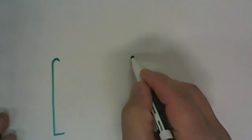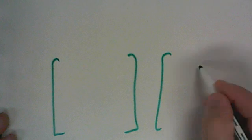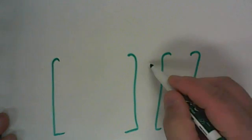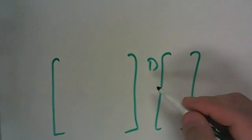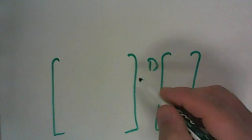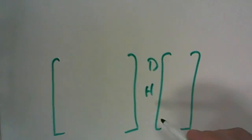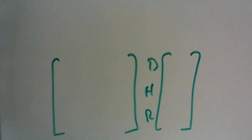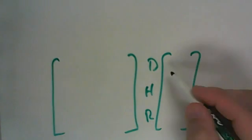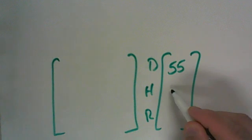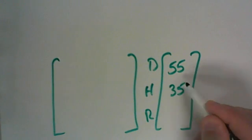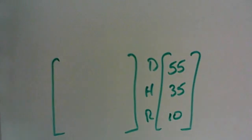You have a dairy farmer who knows that 55% of his herd is dominant. We're going to set it up the same way. There's dominant — 55% of his herd is dominant — then hybrid, and then 10% is recessive. So the initial population we could set up as 55%, 35%, and then 10%. But getting the transition matrix is a little more difficult.